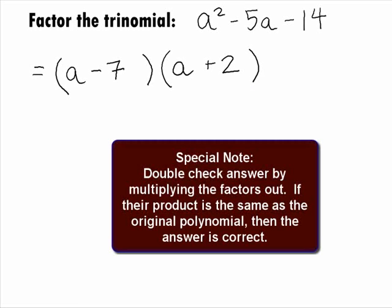Note that we can always double check ourselves on factoring problems by multiplying out the factors that we have. If they multiply to be the original polynomial, then we have the right factors. If they don't, we need to go back and try factoring the problem again. Note that if we multiplied our answer out, we would get the original polynomial.